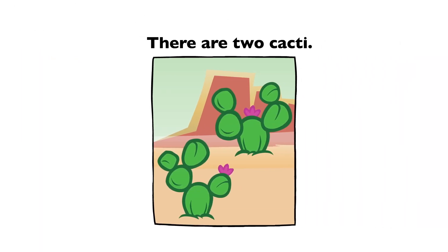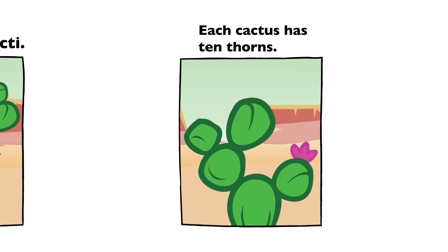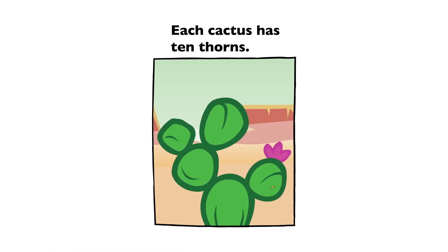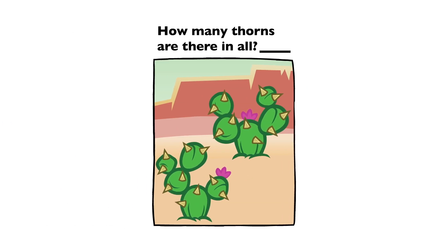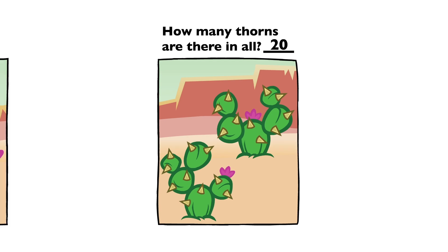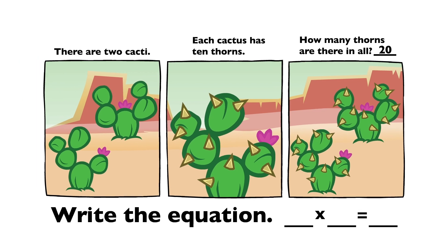There are two cacti. Each cactus has 10 thorns. How many thorns are there in all? 20. 2 times 10 equals 20.